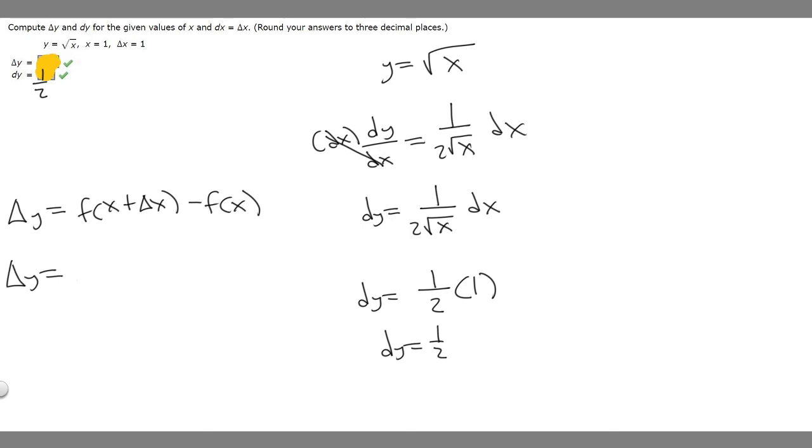So square root of x, which is 1, plus delta x, which is also 1. So it's just 1 plus 1, which is just 2, minus f of x.